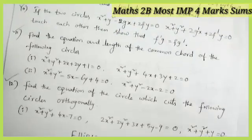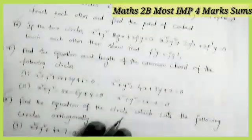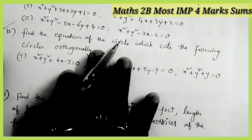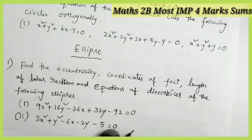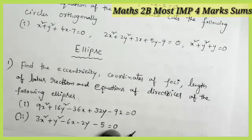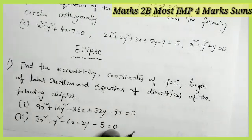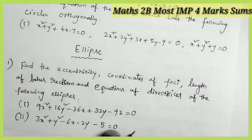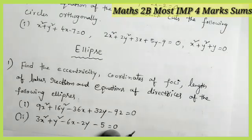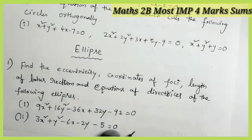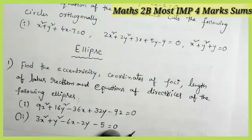These are the four-mark questions from the topic system of circles. Now coming to the next topic: ellipse. From the ellipse you get two questions in the examination — two four-mark questions — and there are very few important questions here, with only one exercise in the syllabus. When you prepare this topic properly, you will definitely attempt two questions in the examination, so all of you must compulsory practice this topic without leaving it.